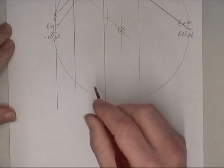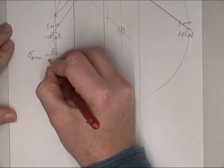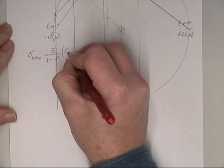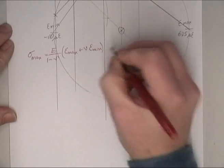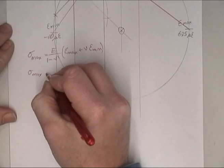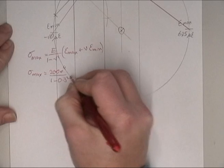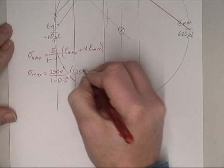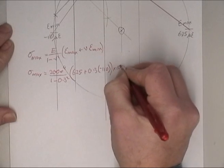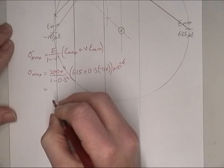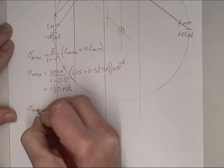So on my original thing, my maximum strain is here at 37 degrees. And my minimum will be 90 degrees to that. To find principal stresses, we can now use these values of strain. So stress max equals E over 1 minus V squared times strain max plus V strain minimum. So stress max is equal to 210 to the 9, 1 minus 0.3 squared, 625 plus 0.3 times negative 110 times 10 to the minus 6, which is equal to 130 megapascals.